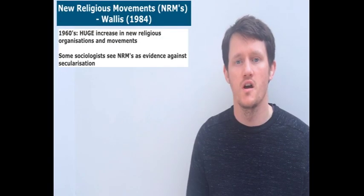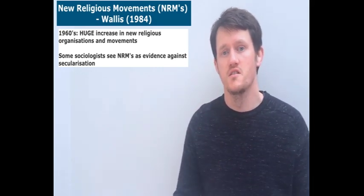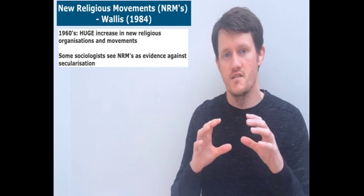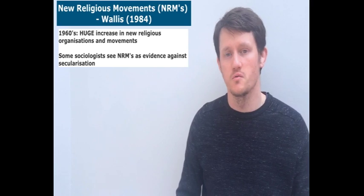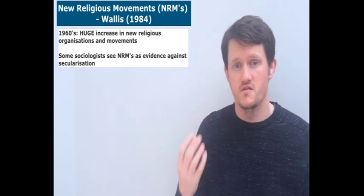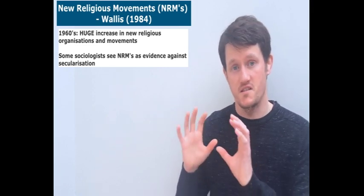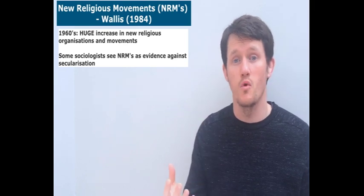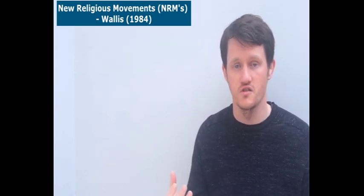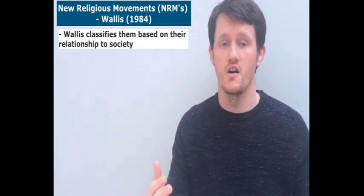This term is from Wallace, who classifies three different types of new religious movements. New religious movements emerged in the 1960s, and this term is used to describe a very wide range of different religious movements that were forming. Many would argue this wide range of new religious movements is evidence against secularisation — they accept that traditional religion has declined, but new religious movements are in some ways taking the place of those traditional religions. Wallace classifies them based on their relationship to society.